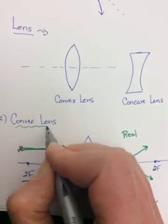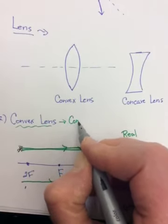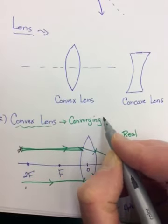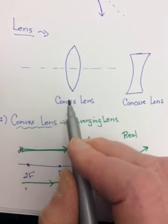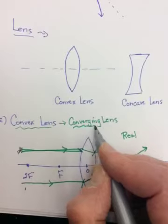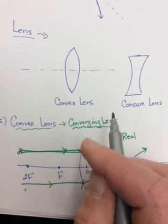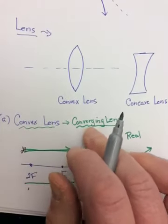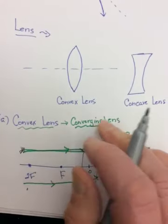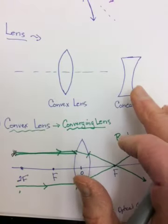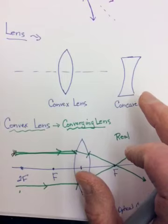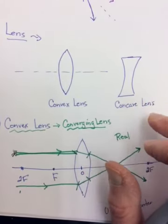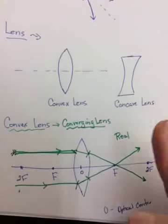A convex lens is a converging lens. And this is why earlier I said, I hope you have the mirrors straight in your head. Because it was a concave mirror that was a converging mirror, and that had five cases. But now it's the convex lens that is going to be converging and have five cases. It was the convex mirror that was diverging and only had one case.